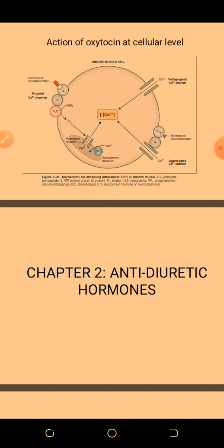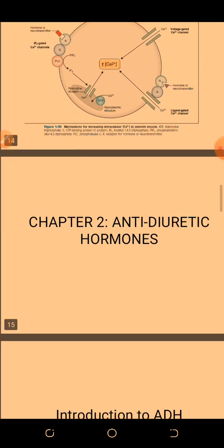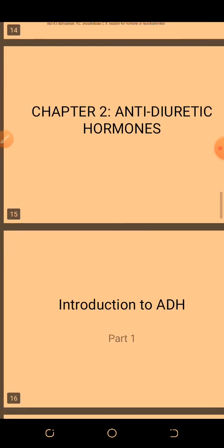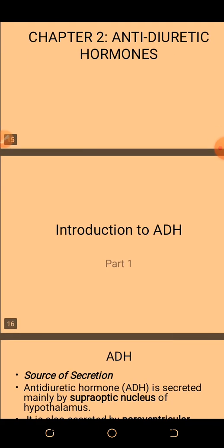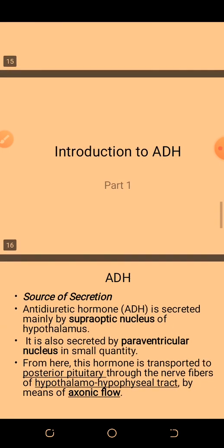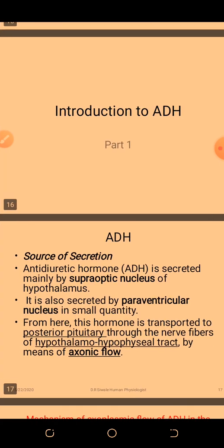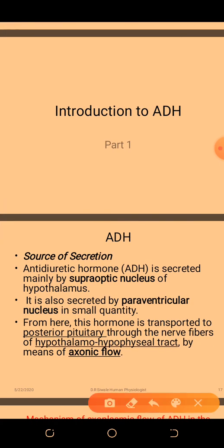So let's quickly look at antidiuretic hormone, ADH. This hormone we also covered under renal physiology. This hormone is produced by the supraoptic nucleus.